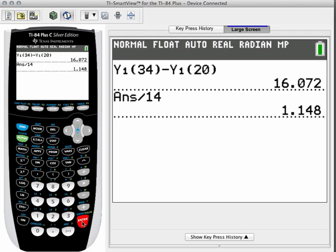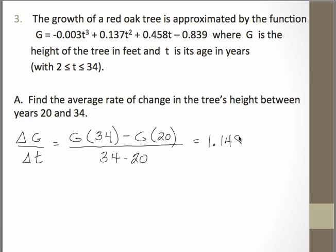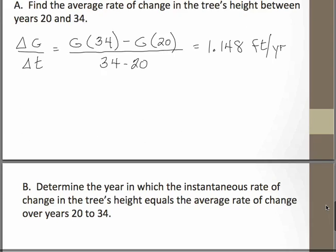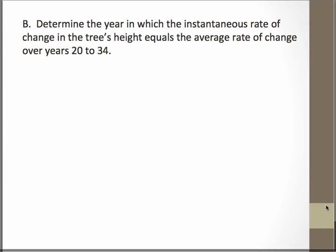Oh, nice value. We don't need to store that. We can just use that as it is. So 1.148. So that would be feet per year. So again, makes sense that it's positive because obviously the tree is going to be growing, not shrinking as it gets older. So that very much makes sense. So our last question then is going to ask us where in there from 20 to 34 years does the instantaneous rate of change in the tree's height equal the average rate of change?